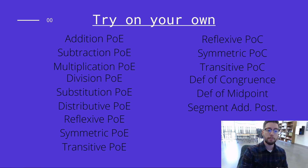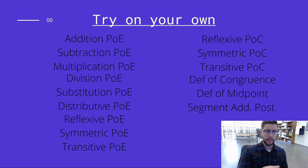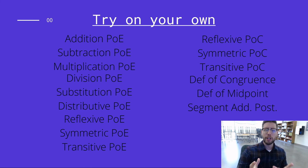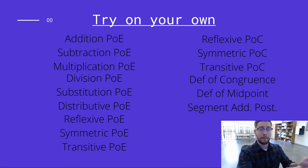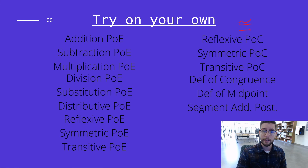Using those postulates and properties — properties of equality, properties of congruence, definition of congruence, definition of midpoint, and segment addition postulate — go through the examples on the right and try to match each one. If you get stuck, my next video lists the answers. Here's a cheat code: if a statement has an equal sign, it's likely a property of equality in the left column; if it has the congruent symbol, it's likely a property of congruence in the right column. Give it a try and I'll see you in the next video.